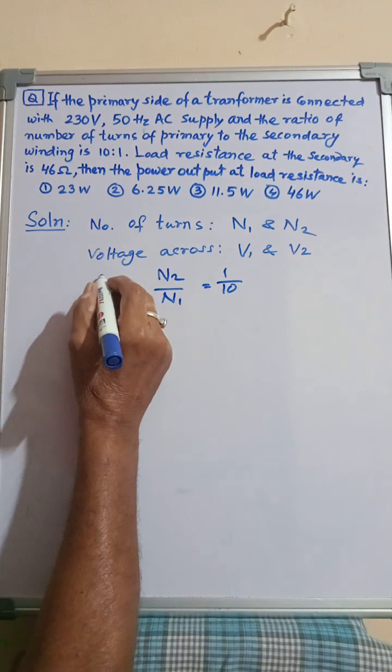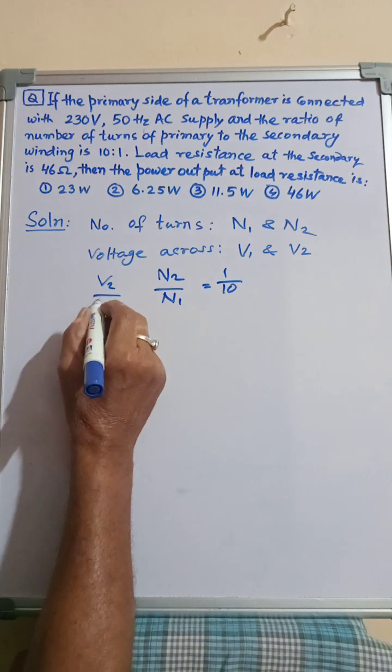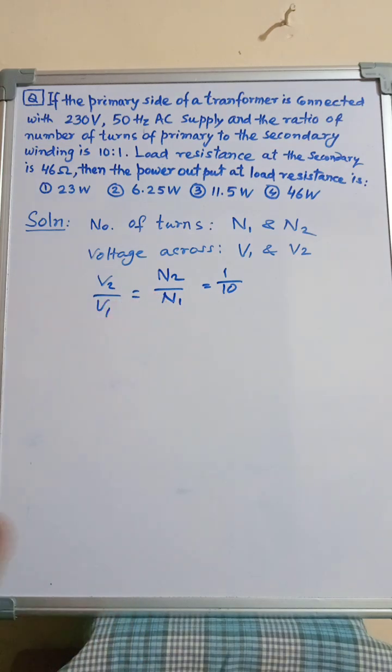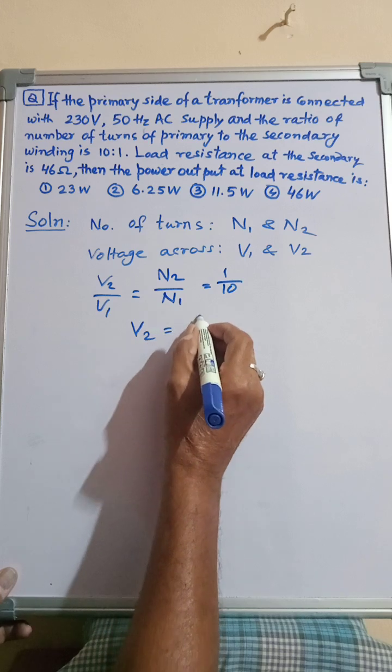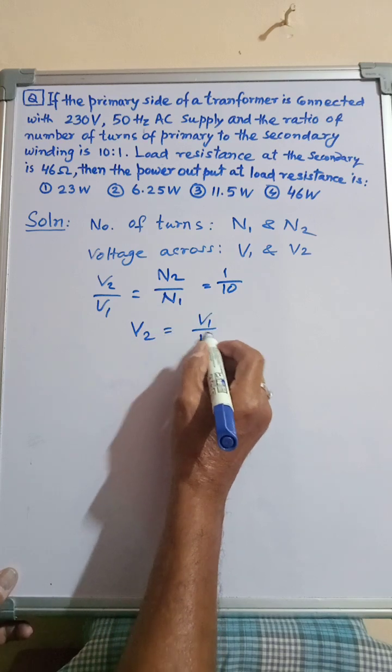Therefore we can write V2 by V1 is equal to N2 by N1 which is equal to 1 by 10, which gives V2 is equal to V1 by 10.